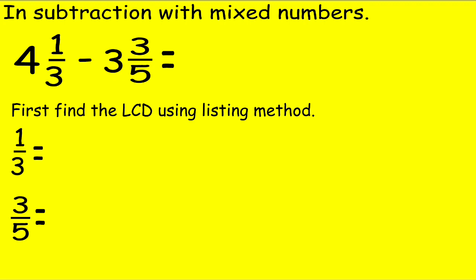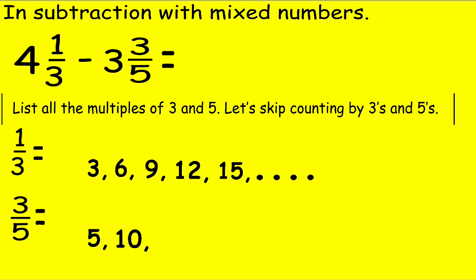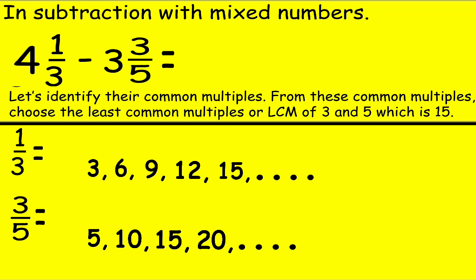First, find the LCD using the listing method. List all the multiples of 3 and 5. Let's keep counting by 3s: 3, 6, 9, 12, 15, and so on. Let's keep counting by 5s: 5, 10, 15, 20, and so on. Let's identify their common multiples. From these common multiples, choose the least common multiple or LCM of 3 and 5, which is 15.